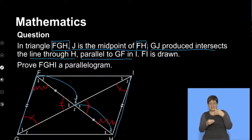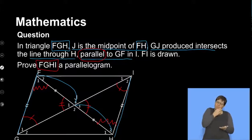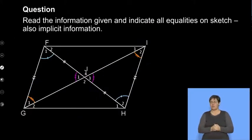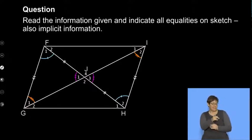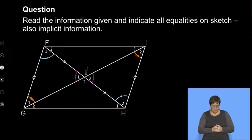What do they want us to prove? To prove that FGHI is a parallelogram — the whole shape is actually a parallelogram. Firstly, read through the information and indicate all the equalities as I showed you. This is how the diagram will look. If you don't start here, you won't have a proper plan of action for proving this parallelogram.